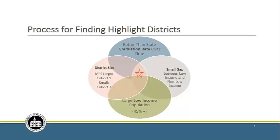What makes a district a highlight district? We look for a graduation rate that is better than the state average, which is sustained over time. We want districts with 50% or more low-income students, and we want to see a small gap between low-income and non-low-income students. We focused on large districts at first, and we've recently been looking at smaller districts.